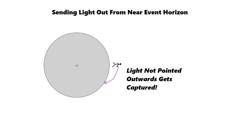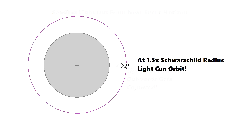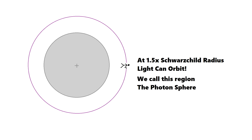The further out you go, the more sloppy your aim can be. Then there reaches a magical point at 1.5 times the Schwarzschild radius, where you can actually fire your laser perpendicular to the event horizon and the photons will orbit the black hole. This is a magic distance where the orbital velocity is the speed of light. We call this the photon sphere — a region where photons could, in theory, orbit the black hole. But in practice, they don't.